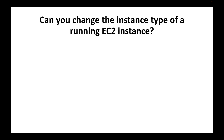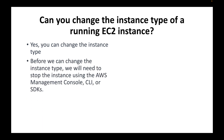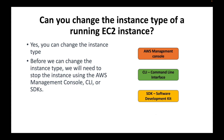The next question is: can you change the instance type of a running EC2 instance? You can change the instance type, however you cannot do it on the fly. You must first stop the instance, and only then can you change the instance type. You can use the AWS console, CLI commands, or SDKs. The steps are: stop the EC2 instance, change the instance type, then start the instance again. You cannot change the instance type while it is in a running state.